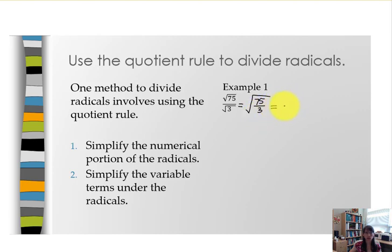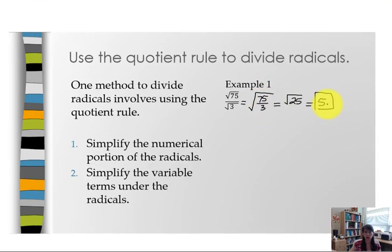So the square root of 25 is what we really have under the radical. Now we hopefully recognize that 25 is a perfect square, so our final answer is going to be 5. So don't worry if you have a denominator with a radical that is not a perfect square. Use the quotient rule to simplify 75 thirds to make 25, and now we do have a perfect square.